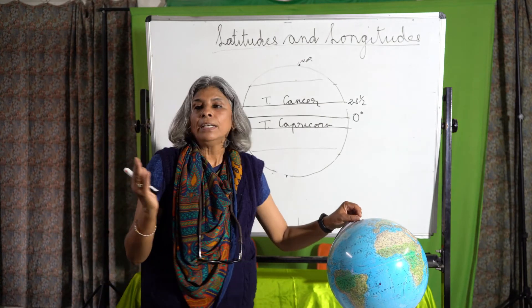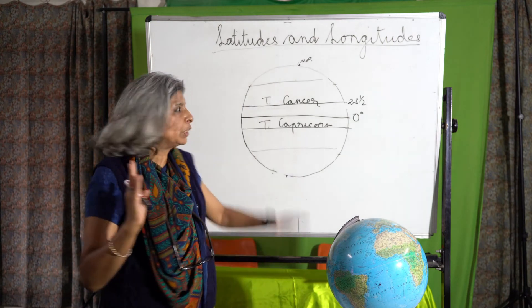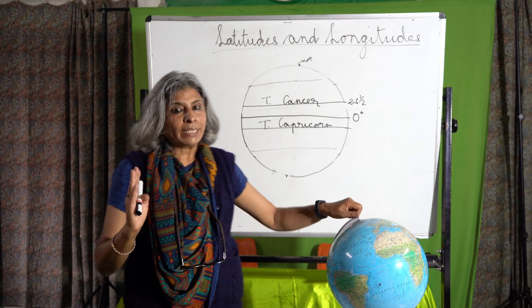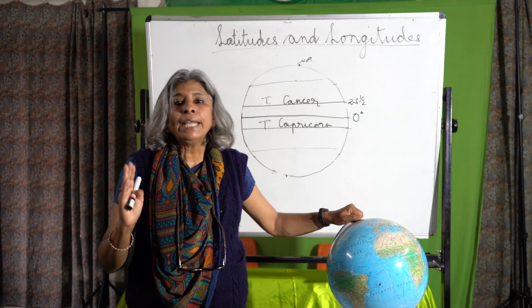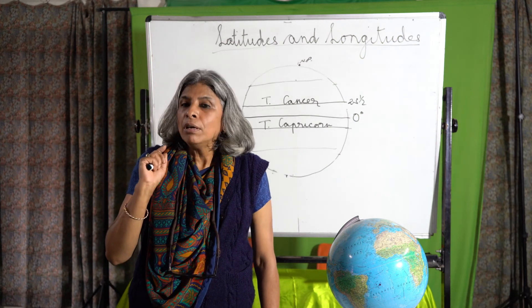Then, children, we have 360 lines of longitude and 180 lines of latitude. We have the axis. What is the axis, children? It is an imaginary line on which our earth rotates.